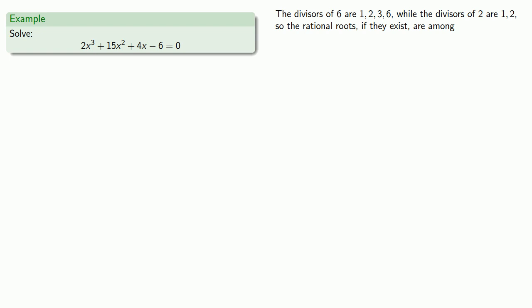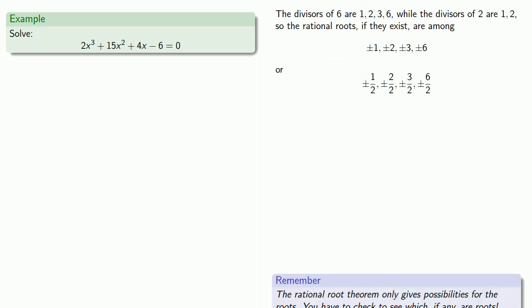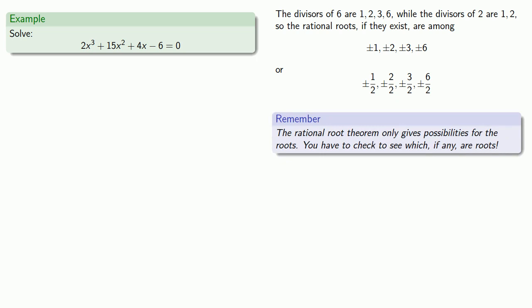And so this gives us a lot of possibilities. And again, the rational root theorem only gives possibilities. You have to check to see which, if any, are the roots.